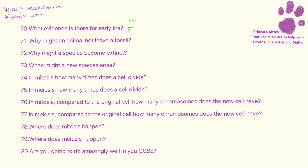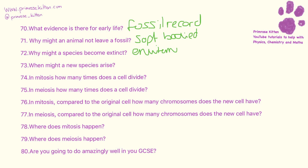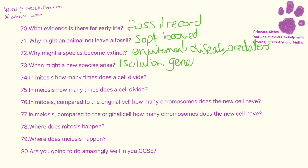The evidence for early life comes from the fossil record. Not everything left a fossil — some things that were soft-bodied didn't leave a fossil. A species might become extinct due to changes in the environment, diseases, predators, or a massive catastrophic event. New species might arrive due to isolation, genetic variation, or natural selection.